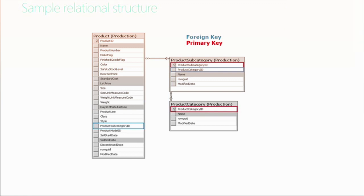That actually maps well to what we were talking about — my spreadsheet full of CDs would be the products in this example, and the genres in my spreadsheet would map to categories. I have jazz, and then bebop as a subcategory of jazz, and things like that — is that kind of what you're talking about here? Yeah, exactly — or subcategory and category.